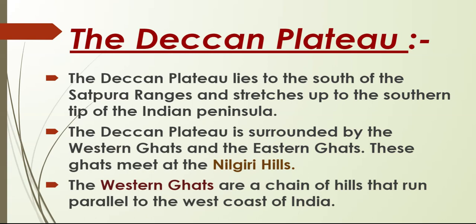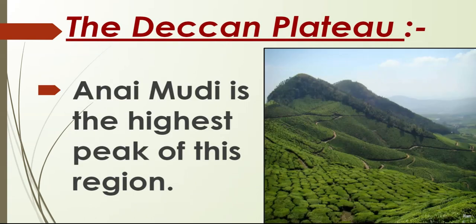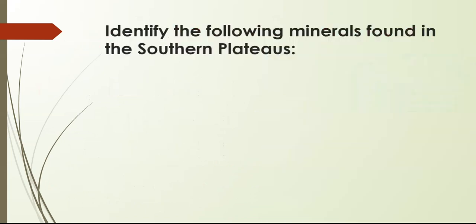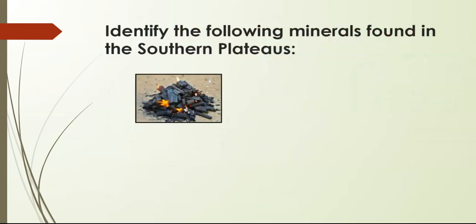The Western Ghats are a chain of hills that run parallel to the west coast of India — all of this we have covered in the northern and coastal plains. Now, a very important fact about the Deccan Plateau: Anaimudi is the highest peak of this region.